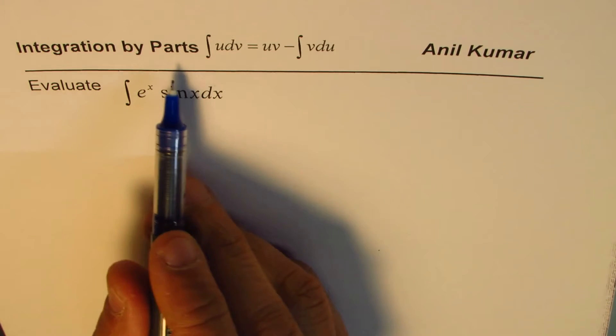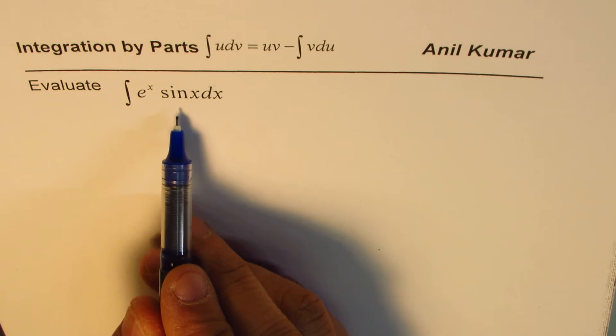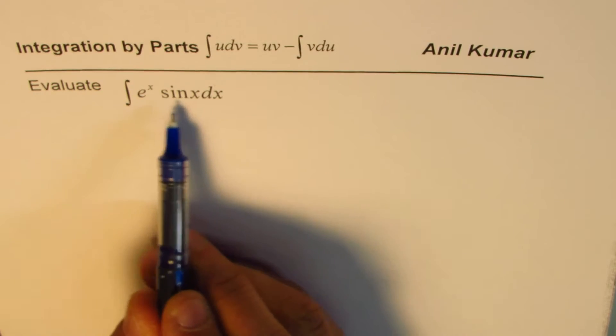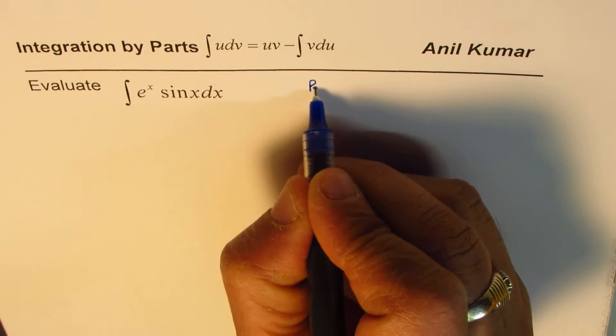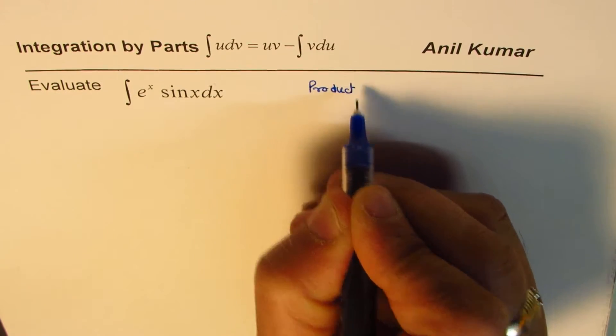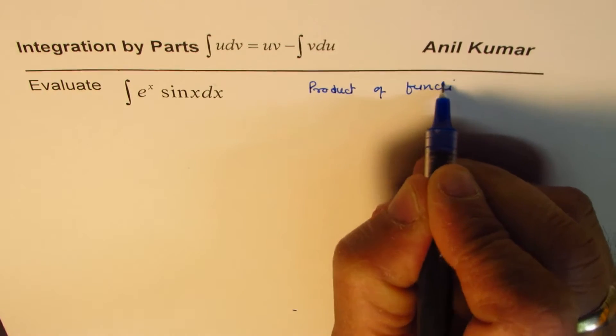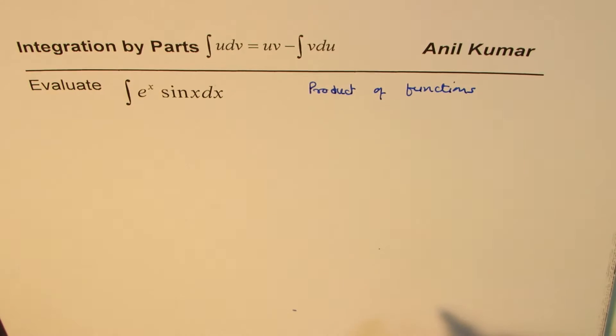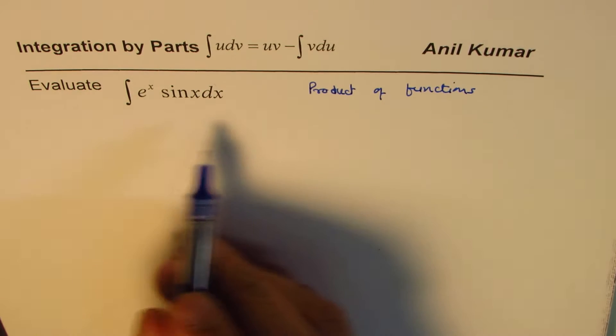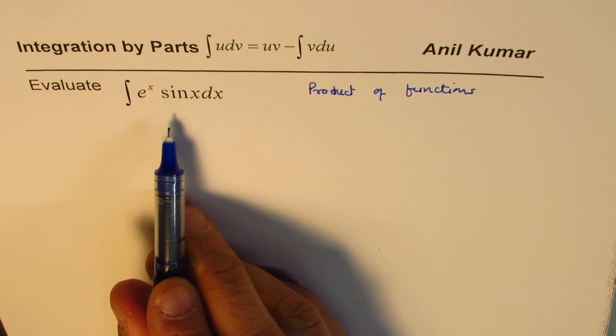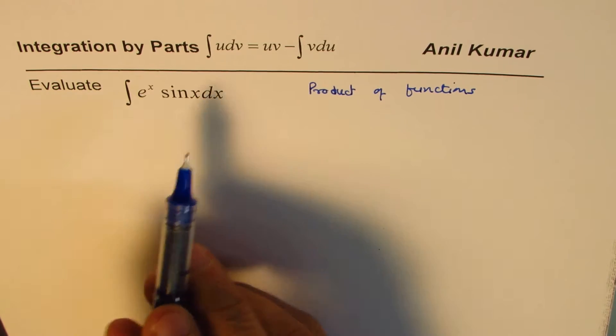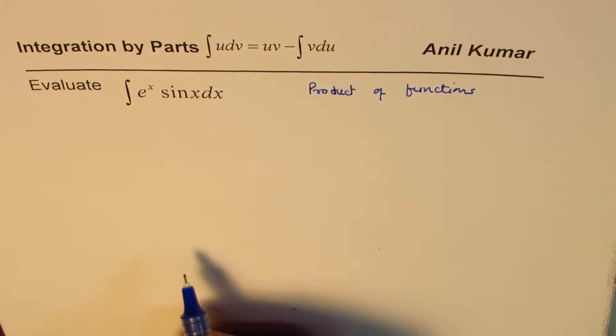We'll use integration by parts to solve this question. We have product of two functions. So whenever you say product of functions, think about integration by parts. Now, whenever you have product of two functions, the question is which one should we take as u and which one should we take as dv?